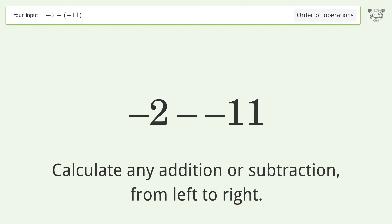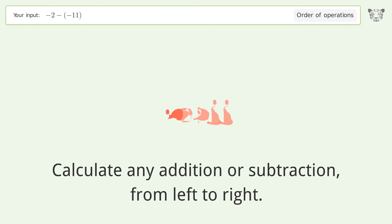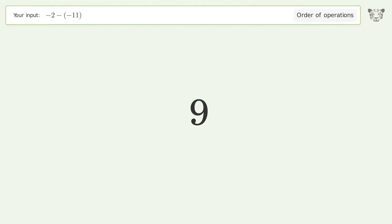Calculate any addition or subtraction from left to right. Minus and minus make a plus. Negative 2 plus 11 equals 9, and so the final result is 9.